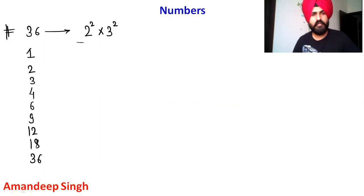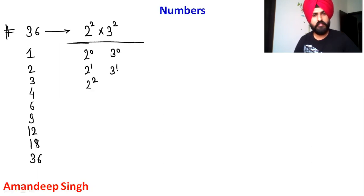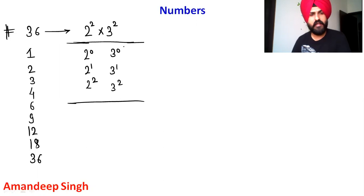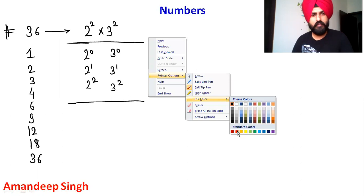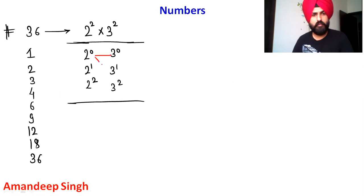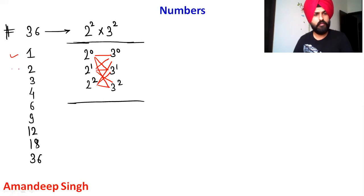We studied in the first video that we divide 36 using powers: 2⁰, 2¹, 2², and 3⁰, 3¹, 3². These are the possibilities. If you make all the combinations, we get all the factors — these are the 9 combinations, which is why we get 9 factors.